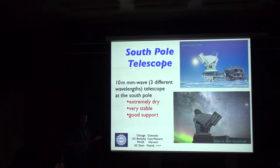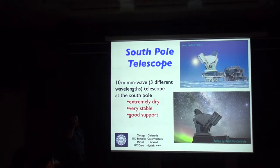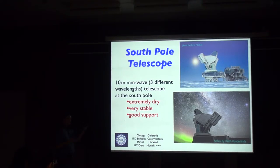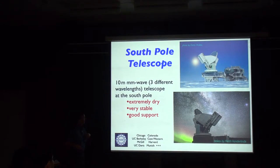Why would you go to the South Pole? It's a long way away, but there are many advantages. It's extremely dry, and when you're observing at millimeter wavelengths, water is your enemy — your microwave oven works by coupling to water. The South Pole is also very stable: the sun comes up once a year and goes down once a year, so your telescope warms up and cools down only once a year. At mid-latitudes you'd have daily fluctuations that would cause a 10-meter telescope to flex differentially, changing your beams. The atmosphere also tends to have smaller fluctuations.